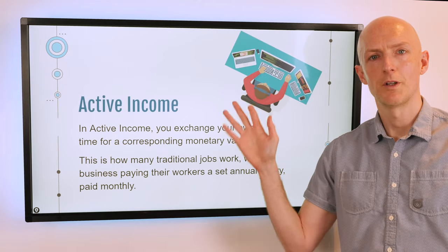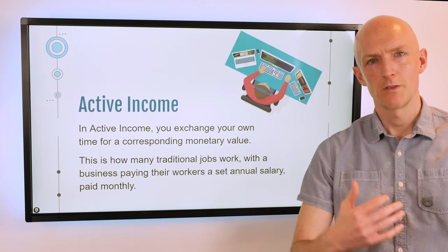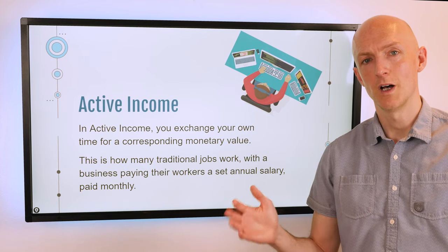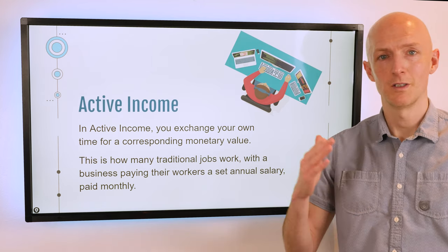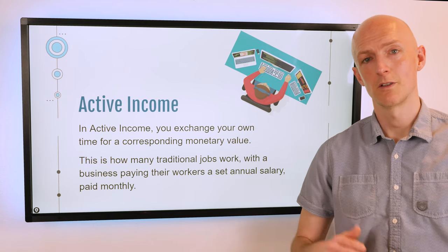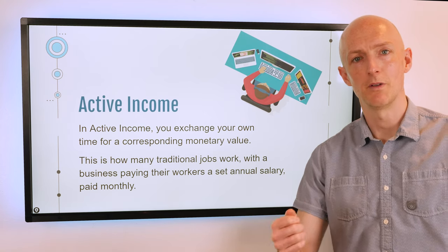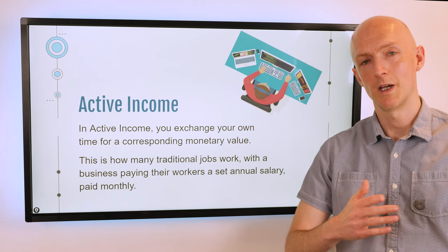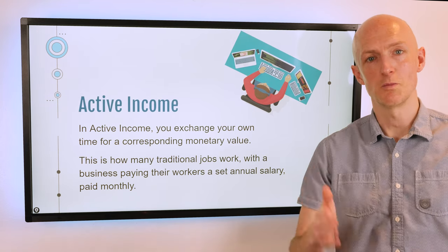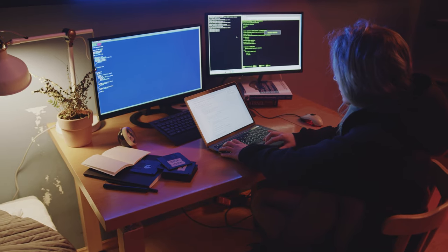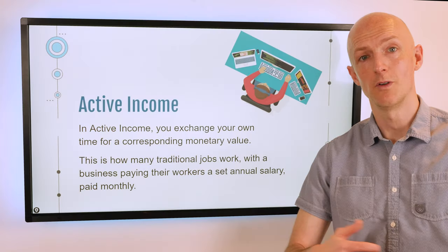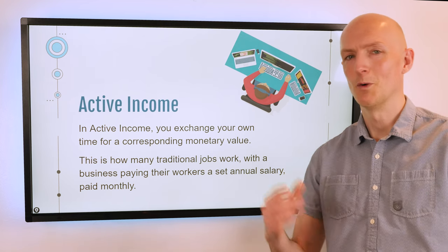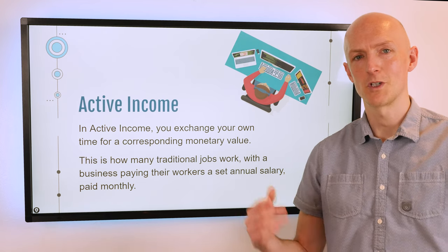So let's have a look at what is active income. Active income is where you exchange your own time for a corresponding monetary value — basically you exchange your time for money, so a set amount of time equals a set amount of money. That's how traditional jobs will work. You will get paid an annual salary, paid out each month. Freelancing works in a similar way — it might be on a day rate or an hourly rate, but there will be some measurement of time with a certain rate associated with that.